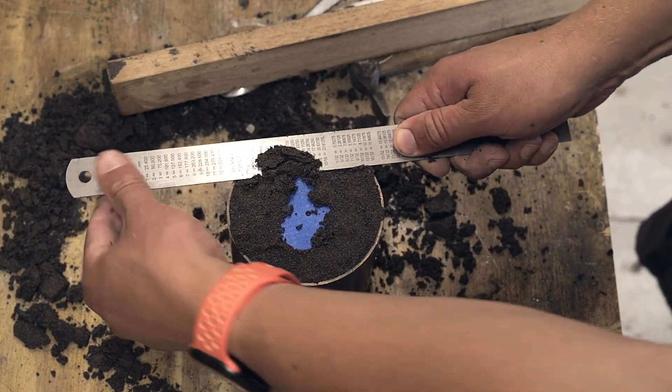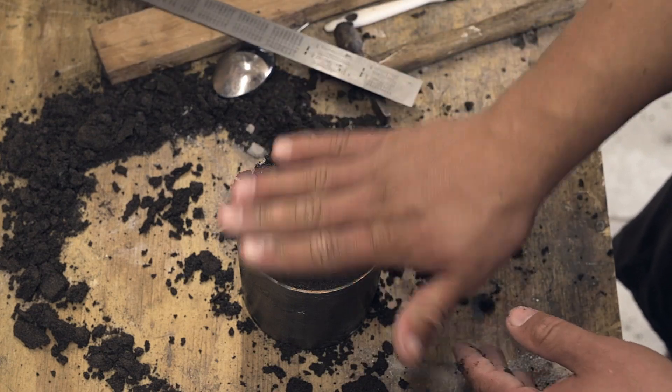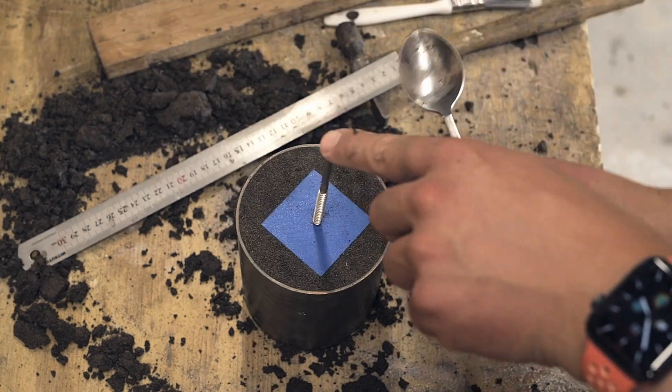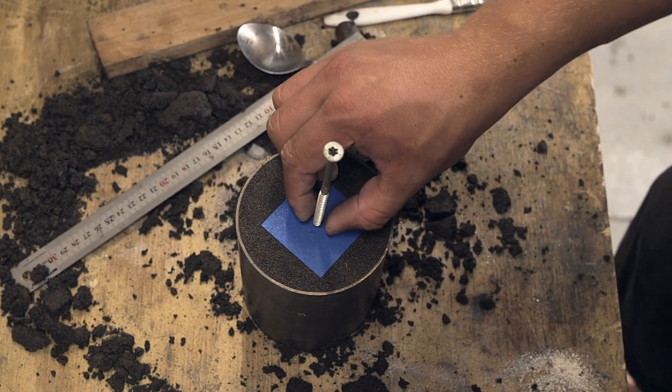The steel ruler scrapes off any excess sand and the 3D printed pattern can now be taken out. Tapping it sideways helps loosen it, making it easier to gently lift out of the sand without disturbing it.